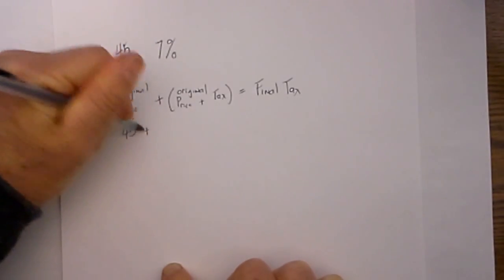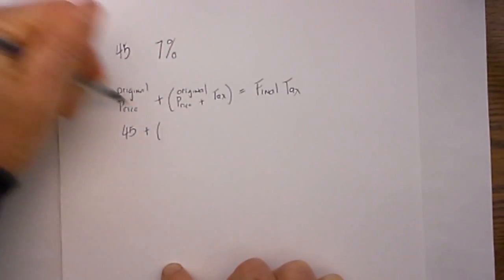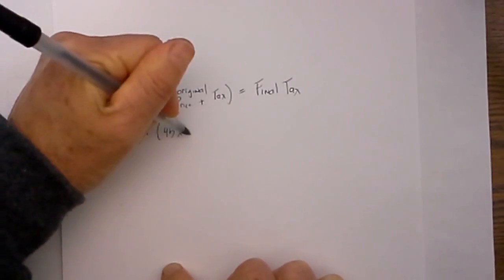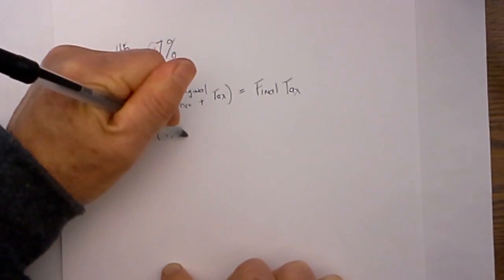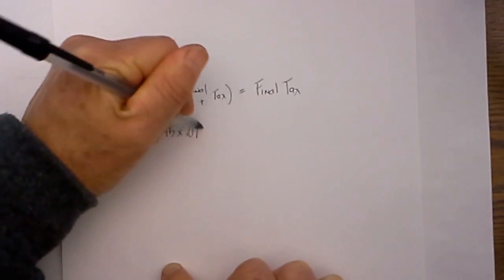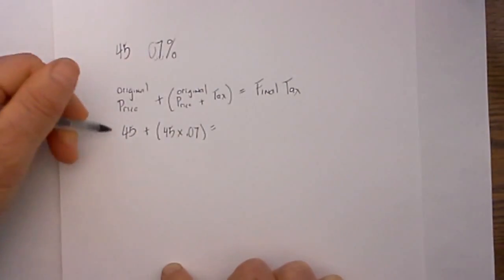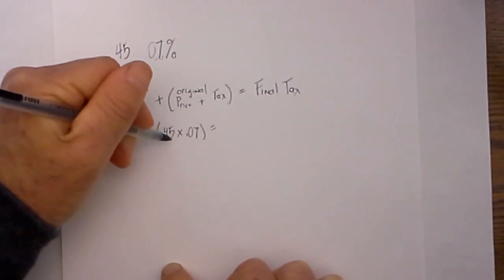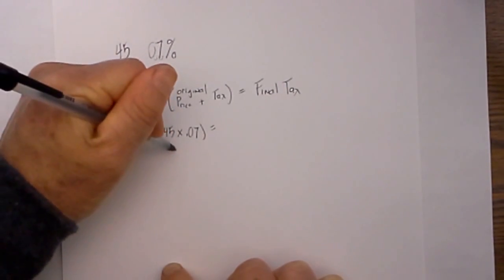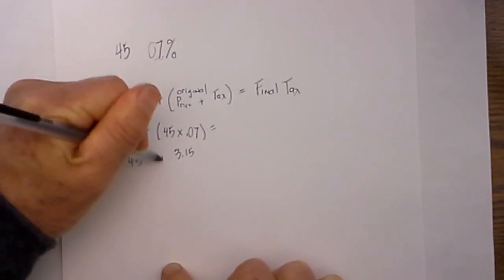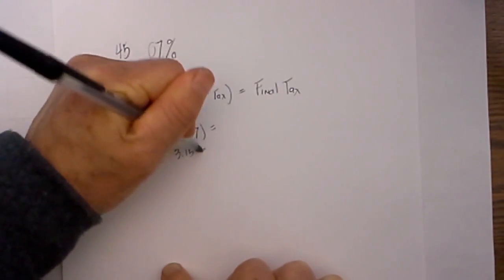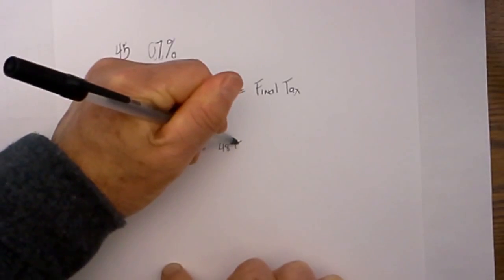We are going to add 45 times 7% and I will convert that to a decimal so I will move the two places to the left. That would be 0.07 equals the final price. So 45 times 0.07 is $3.15 and 45 plus 3.15 is $48.15.